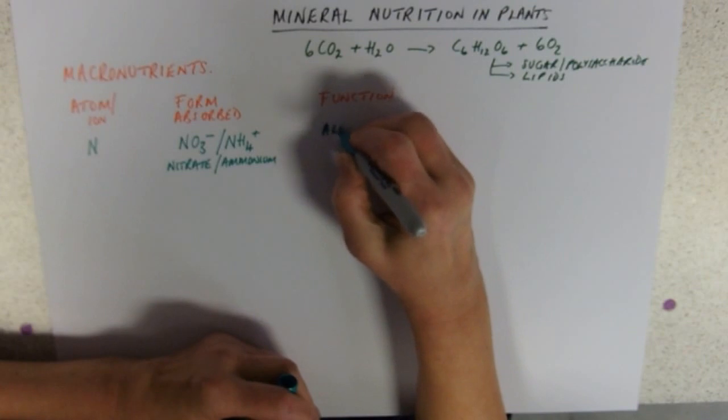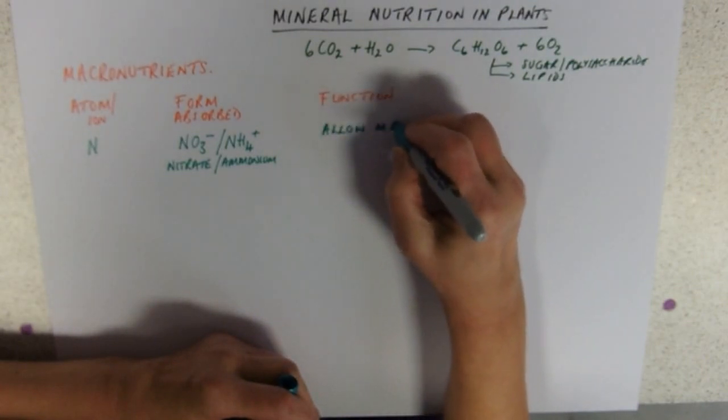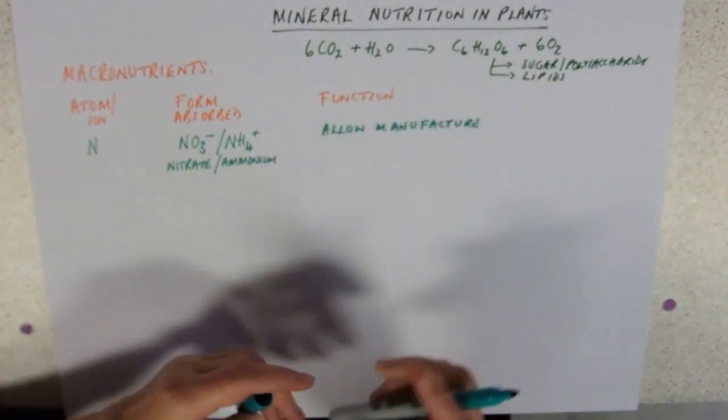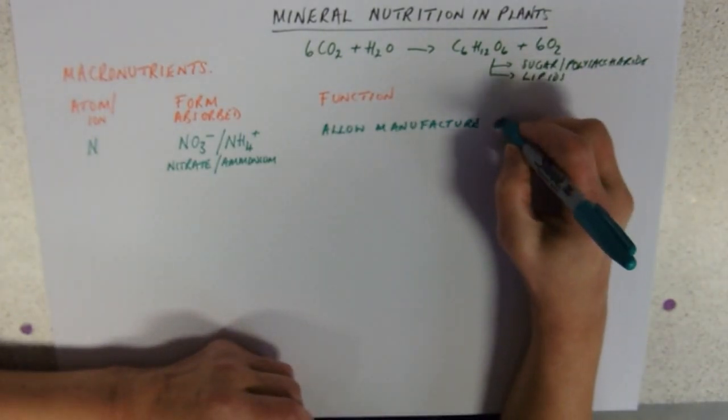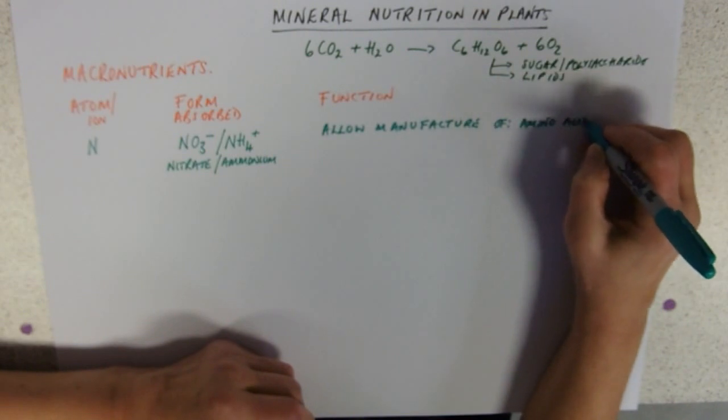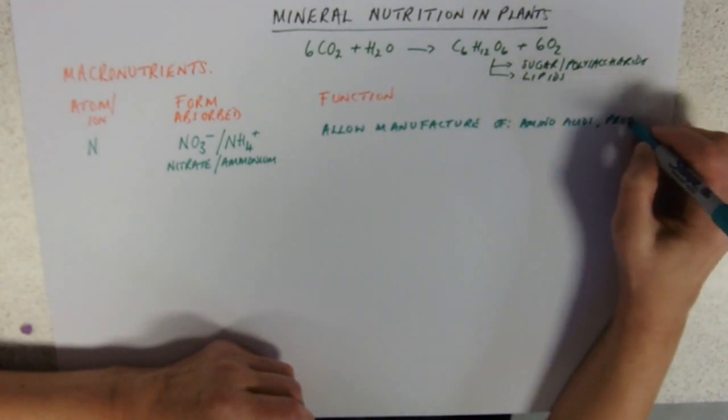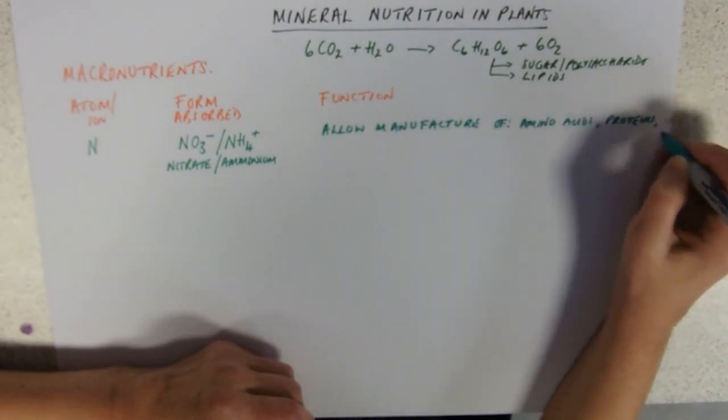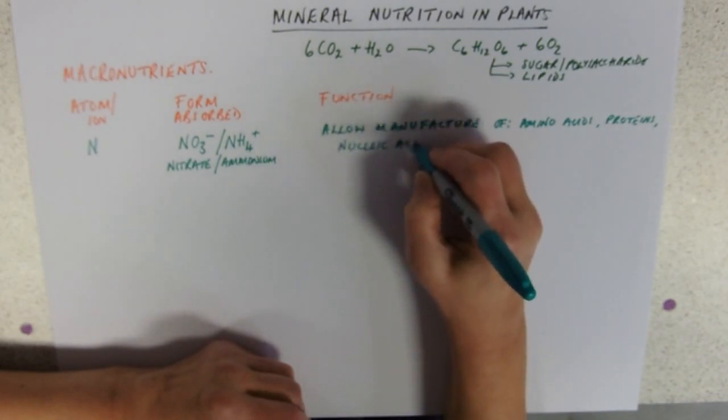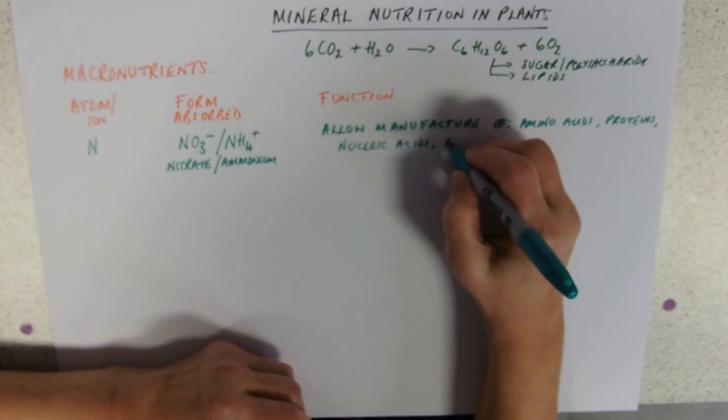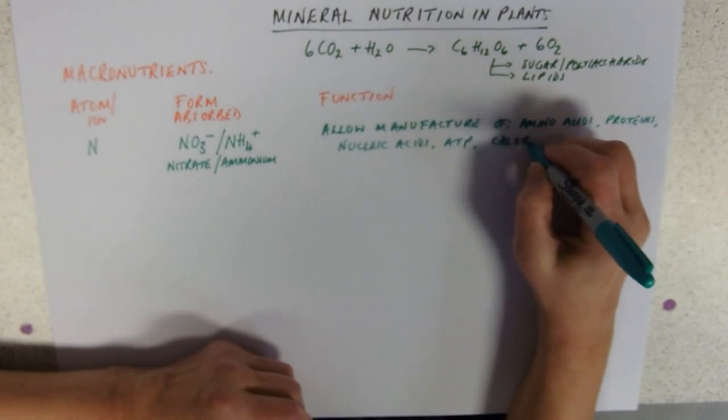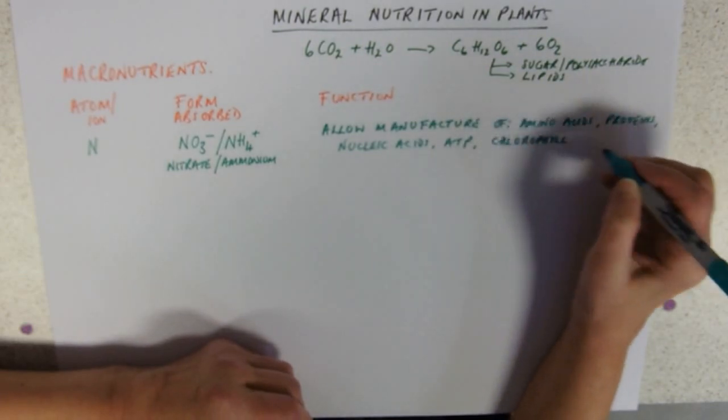So function is to allow the plants, it allows the manufacture of amino acids, proteins, nucleic acids with their nitrogenous bases, ATP which is a nucleotide with a nitrogenous base in, and of course chlorophyll which is a huge chunky molecule with some nitrogen in it.